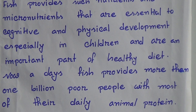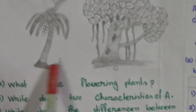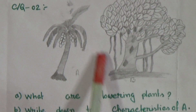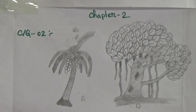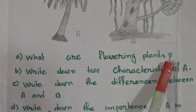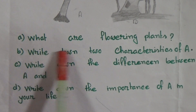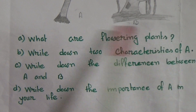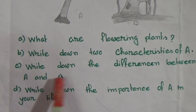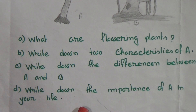Now we will discuss Question 2. Here in the picture there is a coconut tree and a banyan tree. Part A: What are flowering plants? Part B: Write down two characteristics of A. Part C: Write down the differences between A and B. Part D: Write down the importance of A in your life.